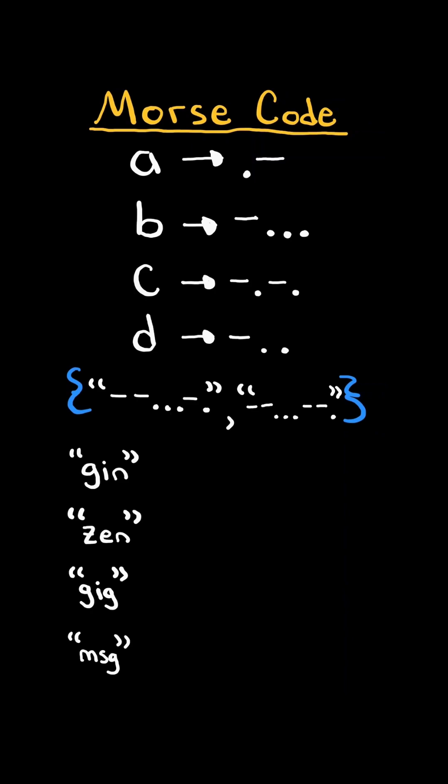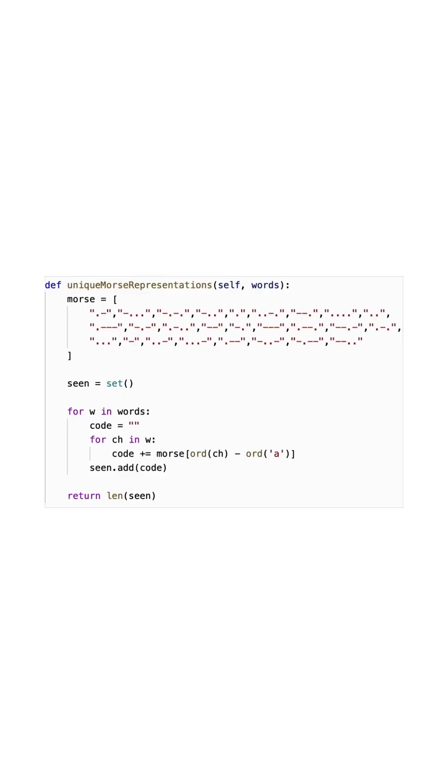At the end our set will contain all the unique Morse code transformations and all we need to do is return the length of our set which in this case is two and here's the code to do so.